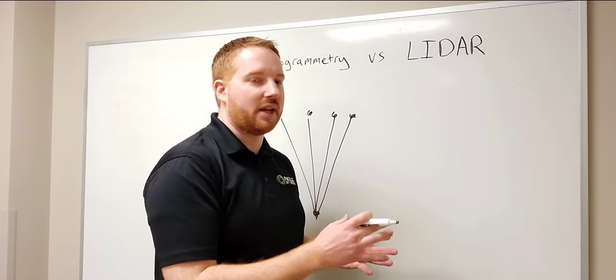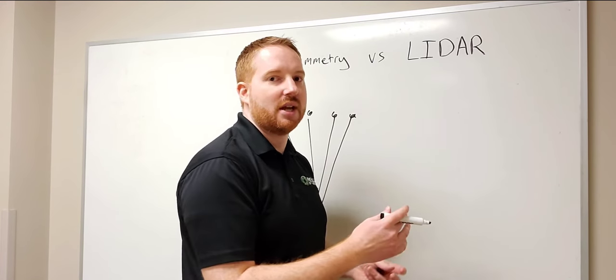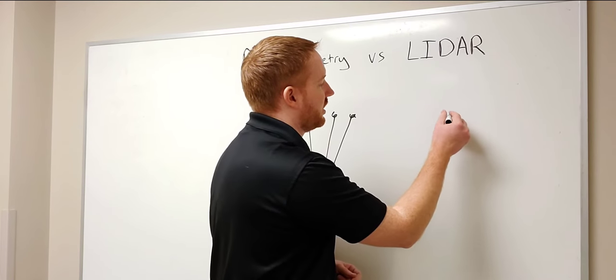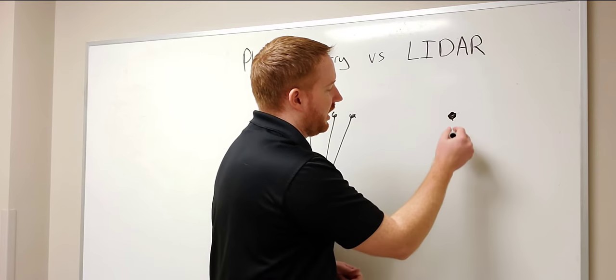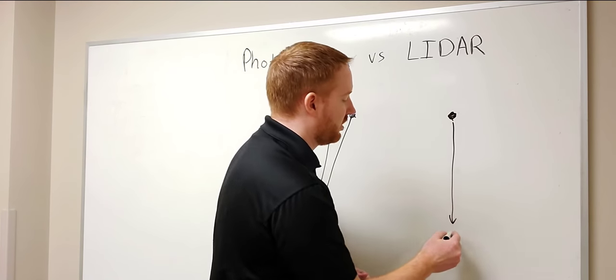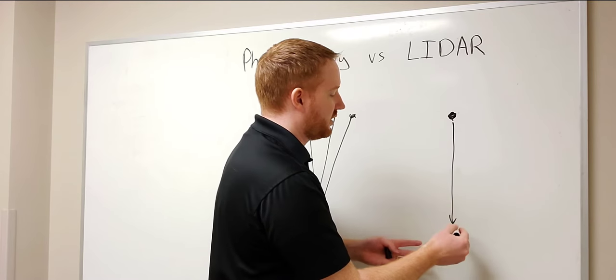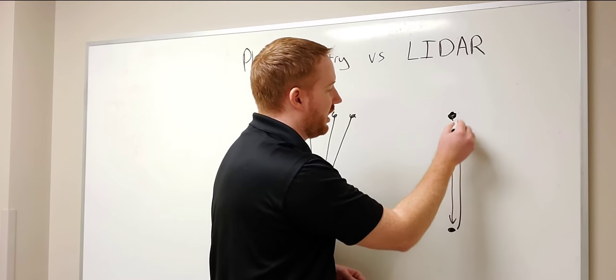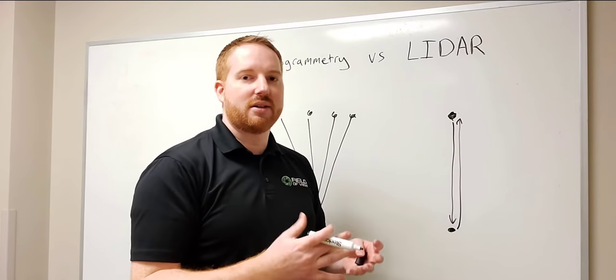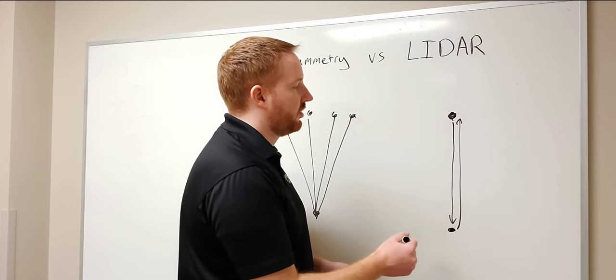LiDAR is an alternative technology that uses lasers to determine point location on the ground. There's a LiDAR head that shines a laser beam, usually multiple laser beams at a time, at the surface and it will reflect back into the sensor and it will know how far away this point is.